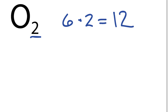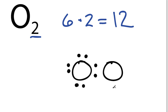And we're going to distribute those valence electrons around the atoms, the oxygen atoms. So we draw one oxygen, another oxygen. And let's put 2 between here to form a chemical bond. So we've used 2, 4, 6, 8, 10, 12.